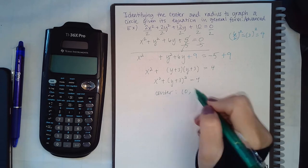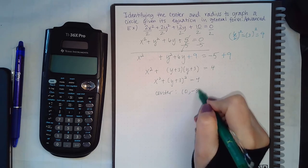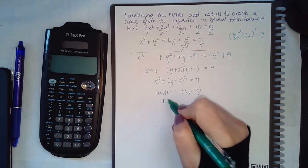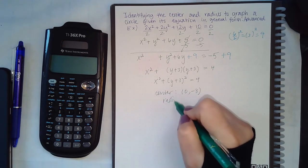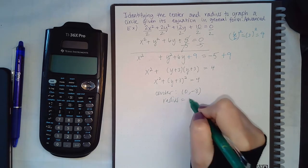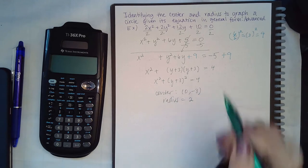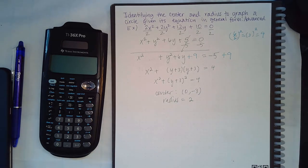So I get x minus 0 squared plus y plus 3 squared equals 4. The center is 0, negative 3 (opposite sign), and the radius is 2 since 2 squared equals 4.